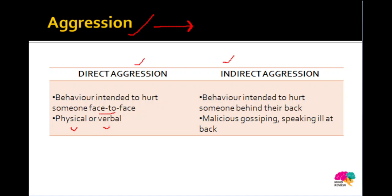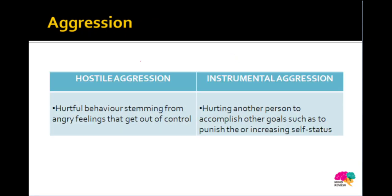That is direct aggression where you display your aggression face to face. On the other hand, indirect aggression is where you hurt someone but behind their back — for example, by gossiping or speaking ill of somebody behind their back. So these are examples of showing aggression indirectly, without coming in front of that person.